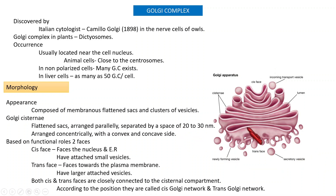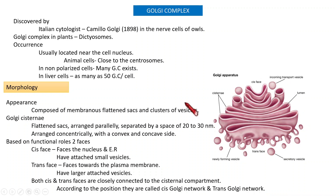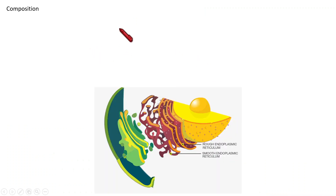Based on position, the network near the endoplasmic reticulum is called the cis Golgi network, and the network on the other side is called the trans Golgi network. The central-most portion is called the cisternae.